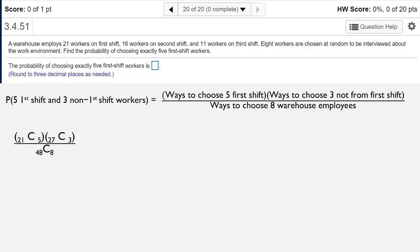When we expand these out into their fraction forms, we get 21 factorial over 5 factorial times 21 minus 5 factorial, times 27 factorial over 3 factorial times 27 minus 3 factorial, divided by 48 factorial over 8 factorial times 48 minus 8 factorial.